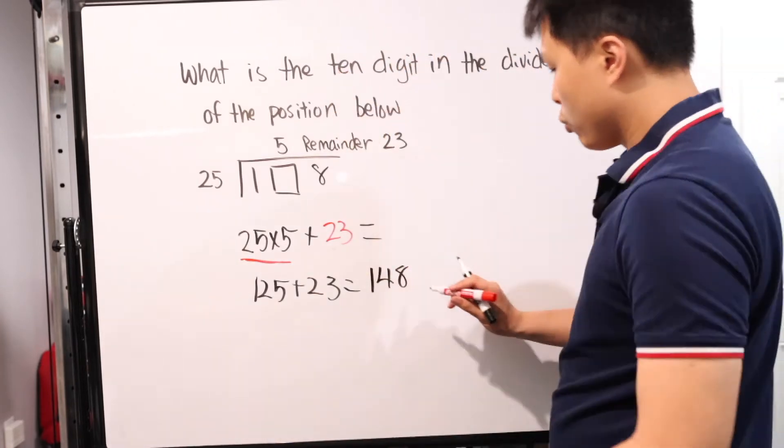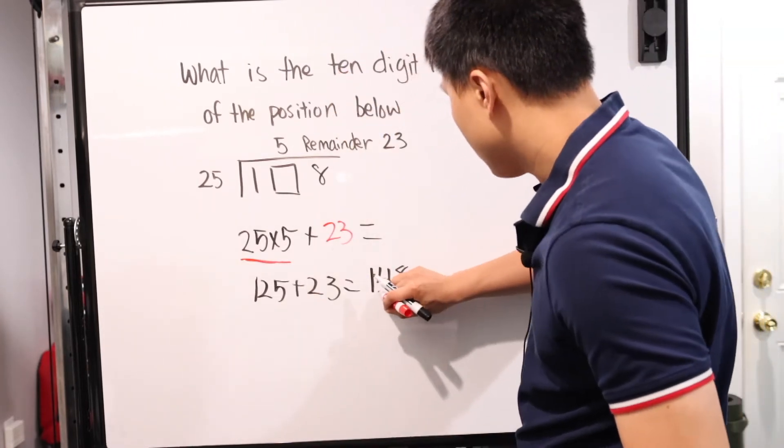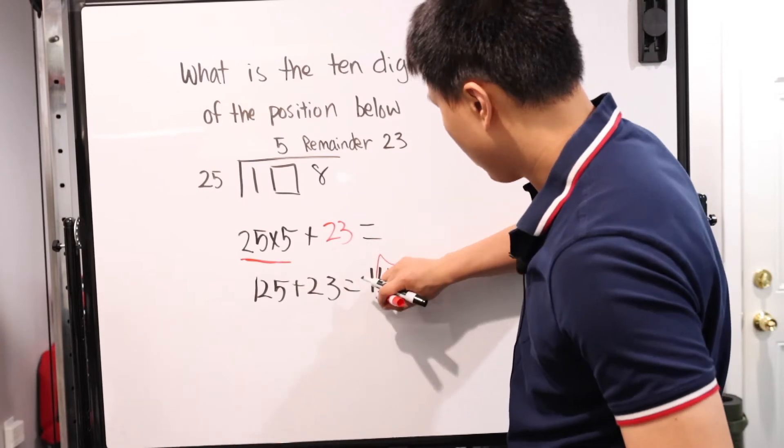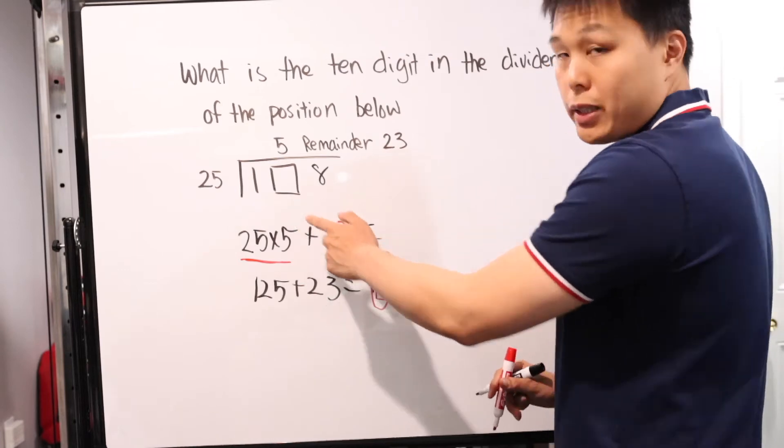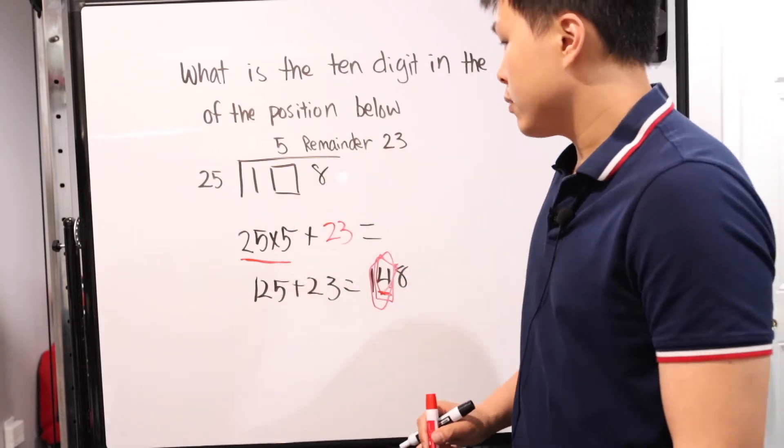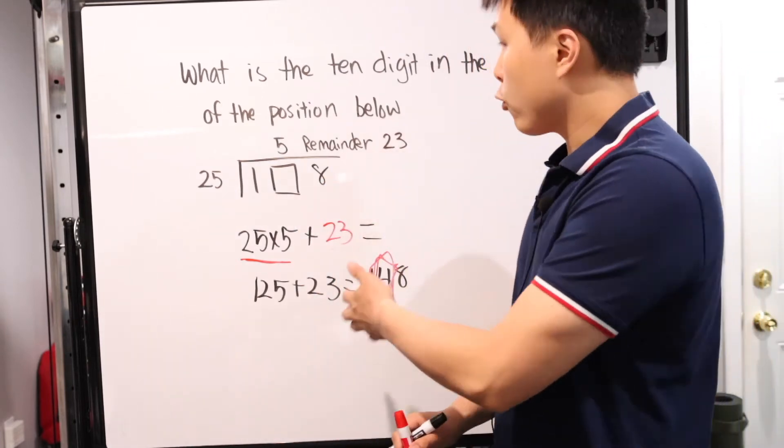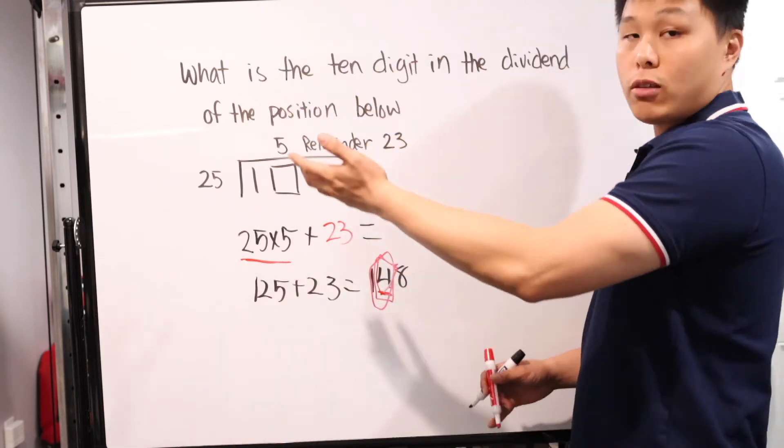25 times 5 plus our remainder 23 will give us this number. Plain and simple. 25 times 5, hopefully we're confident in this, that's 125 plus 23, which gives us 148. Keep in mind it's asking for the tens digit, so we're only looking at this number right here. That number, 4, is what's missing. In your multiple choice, you have to pick the number 4 for this question.